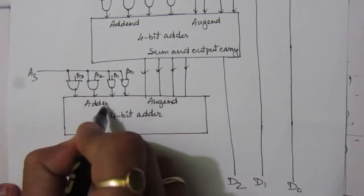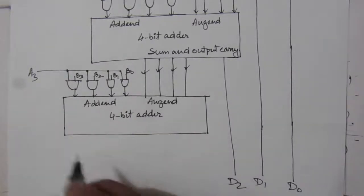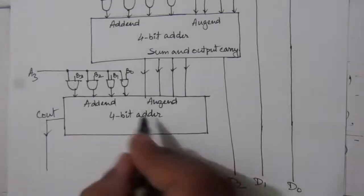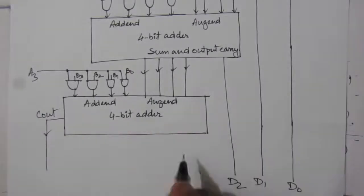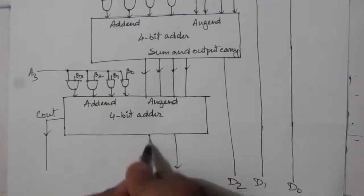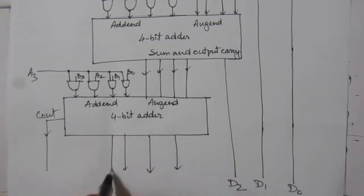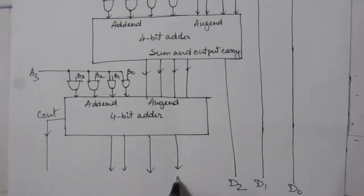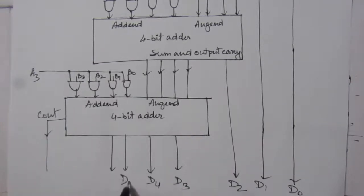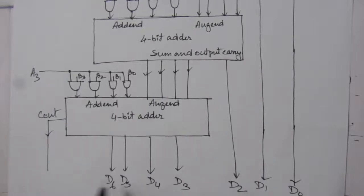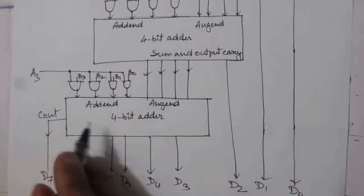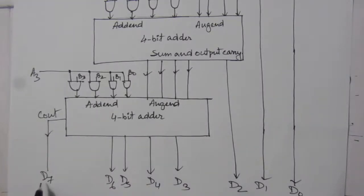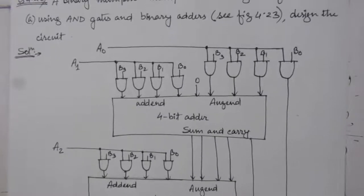This is the addend of the 4-bit adder. We will have one output carry (cout) and a 4-bit sum output. So we can label the outputs: d2, d3, d4, d5, d6, and the carry-out will be d7. So if there is a carry, that will be d7. This gives us an 8-bit output number, from d0 to d7. So this is the complete circuit of the 4-bit by 4-bit binary multiplier.